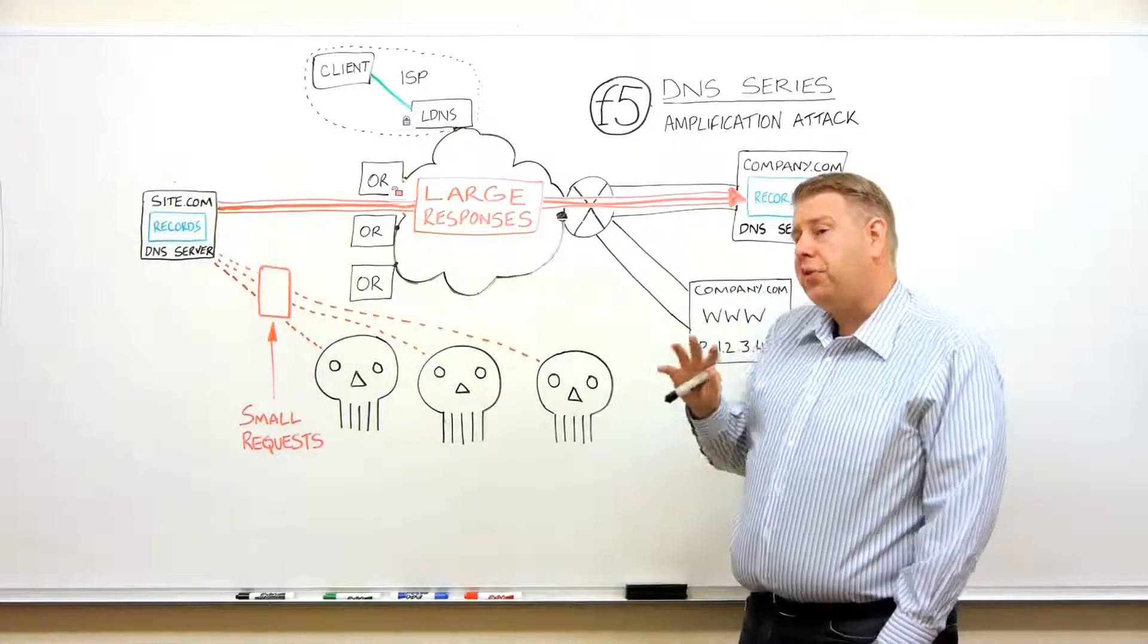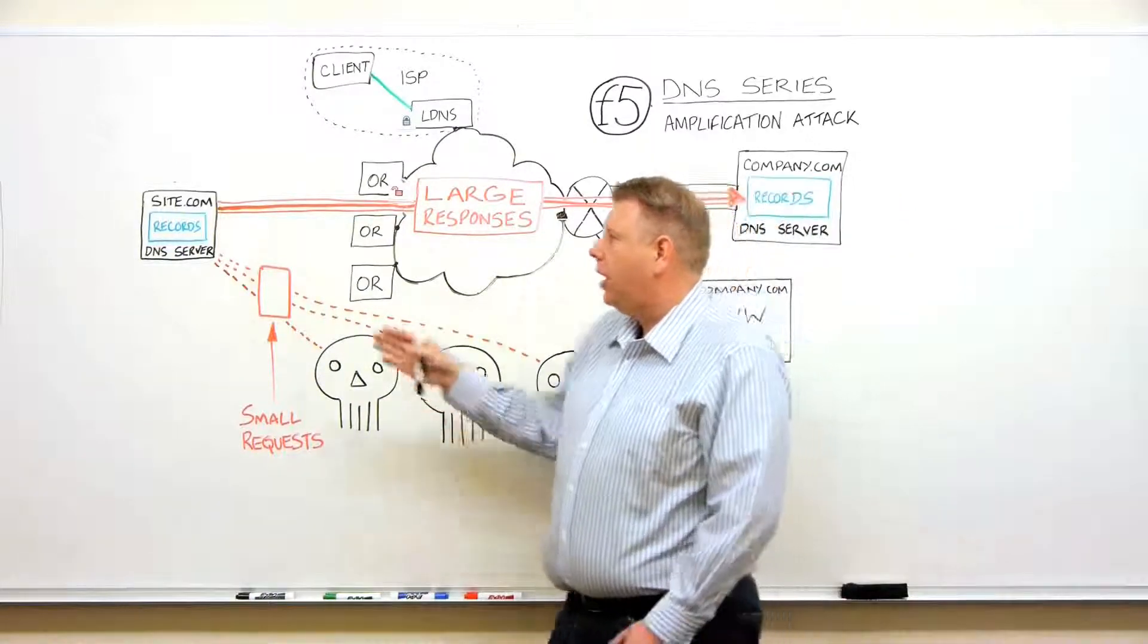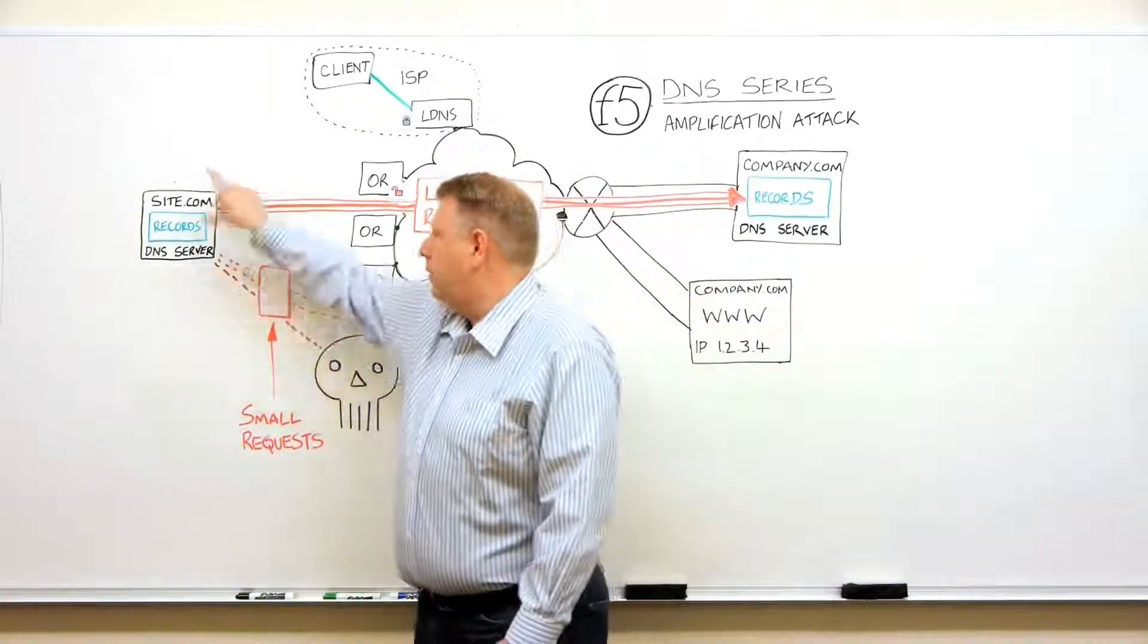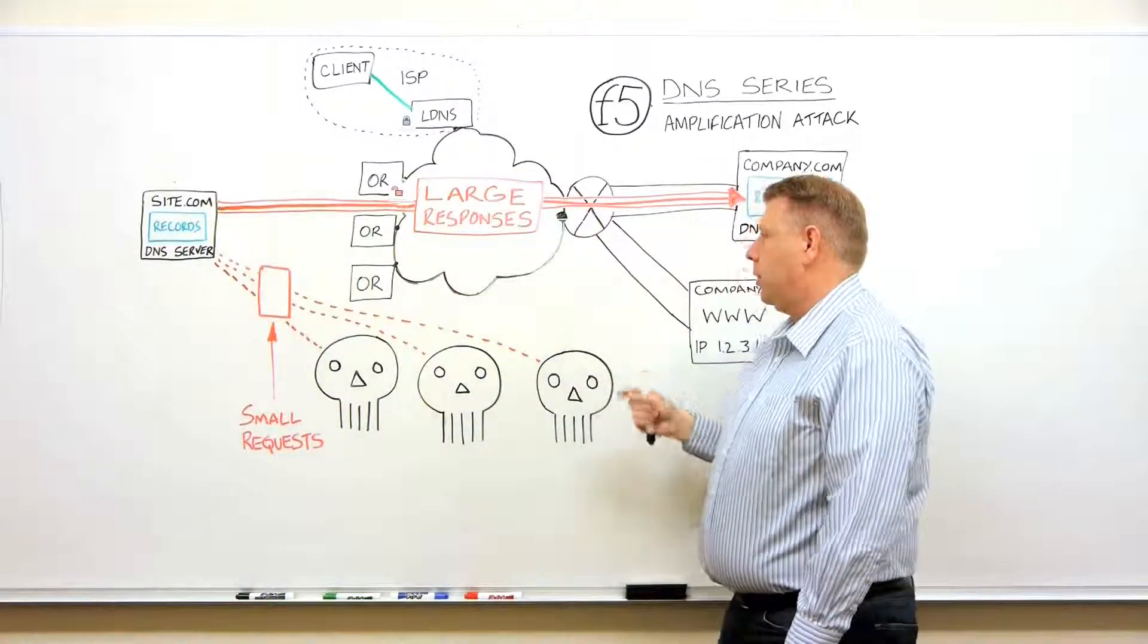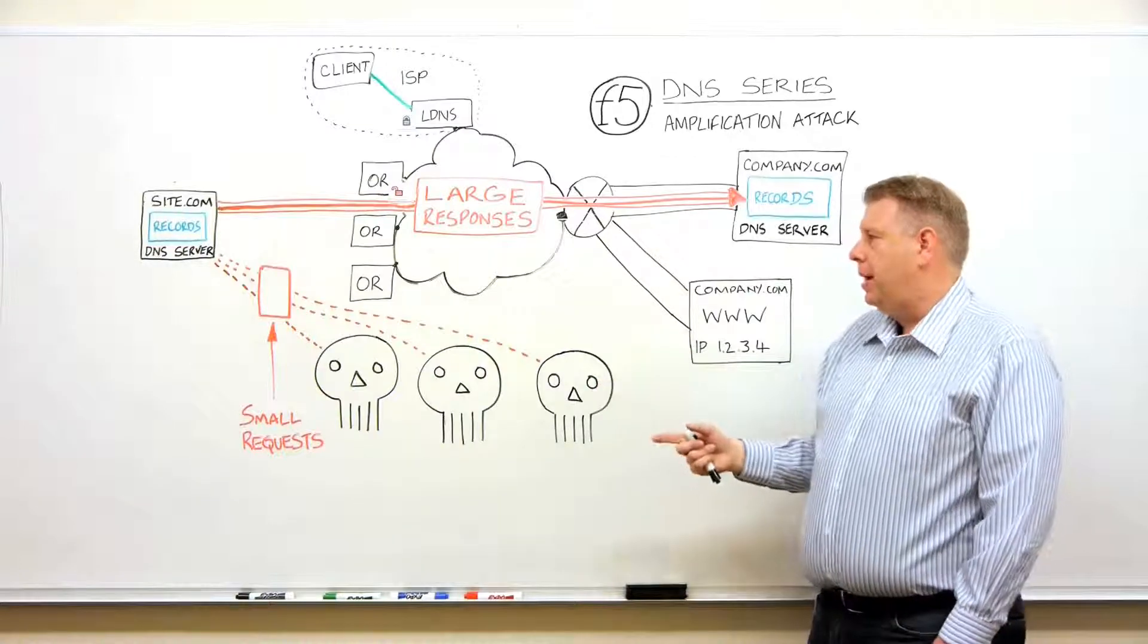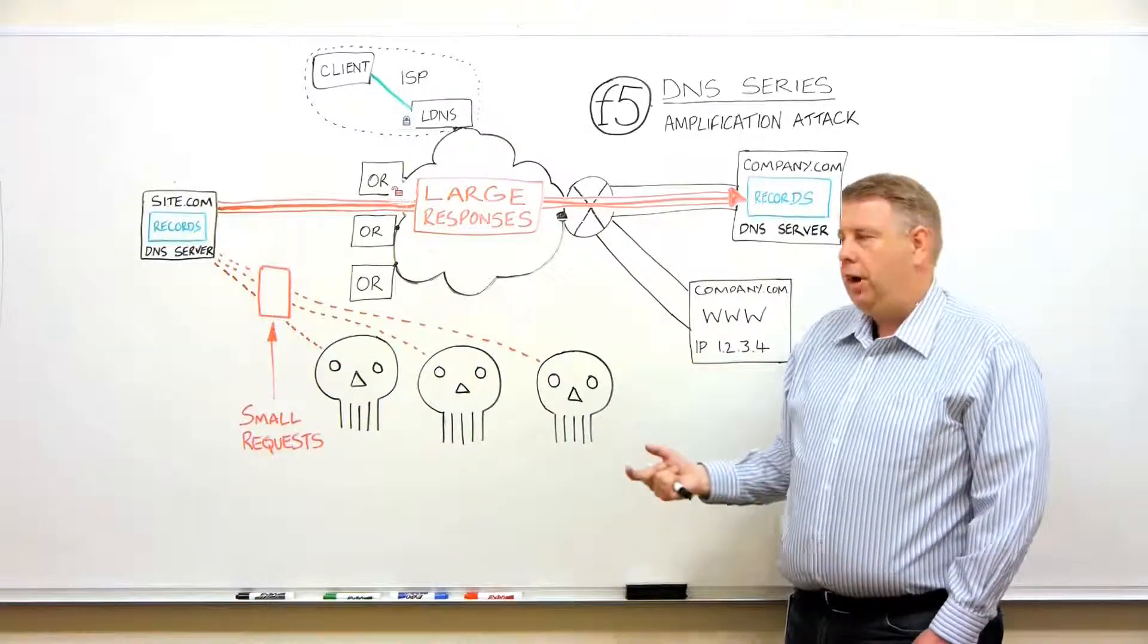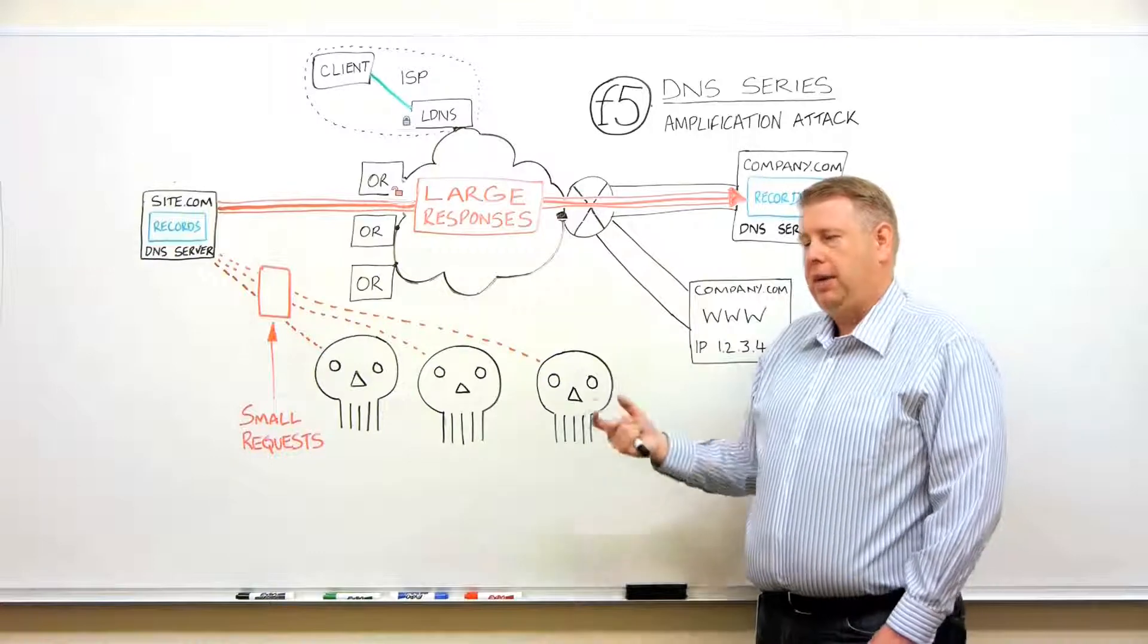Now there's a flaw with this system and this type of attack, and that is it relies on this server to respond with these large responses. You need to have more of these servers to send more responses. So in the next example, we're going to talk about a more clever way to utilize what we call open resolvers on the internet to amplify the attack even more and make it even more difficult to detect and prevent.